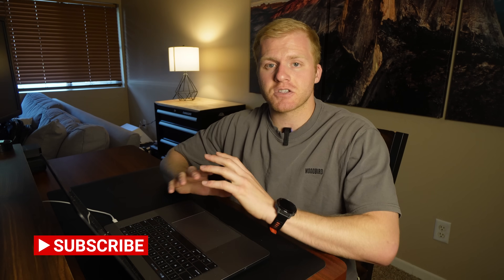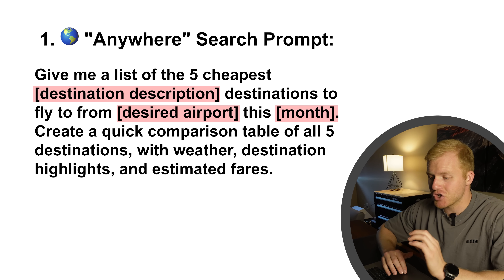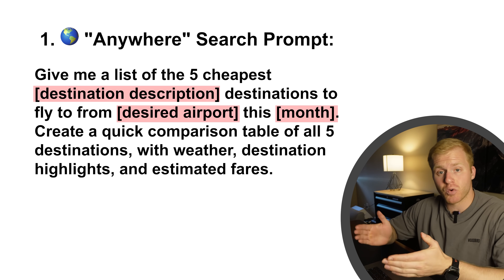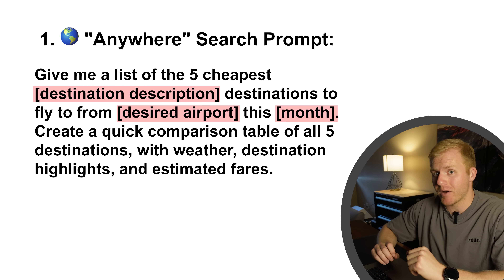The first prompt I call the Anywhere Search Prompt. This is the perfect place to start, whether you're just beginning to plan your trip and gathering information, or whether you know exactly where you want to travel. This is going to be the best prompt to use to start gathering information to find cheap flights. The prompt reads as follows: give me a list of the five cheapest — and then you're going to plug in your destination or destination description, which I'll talk about in a second.